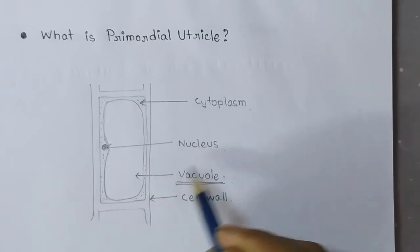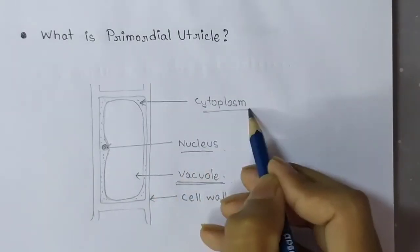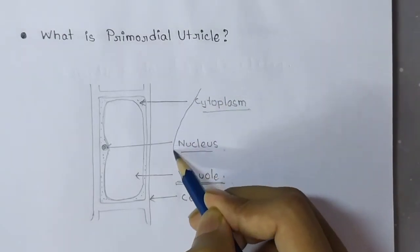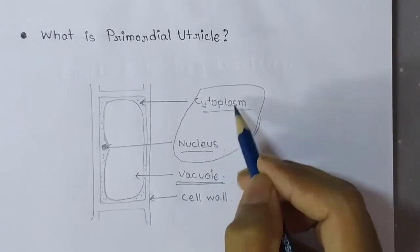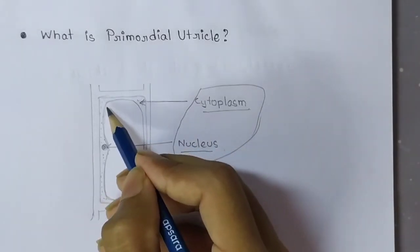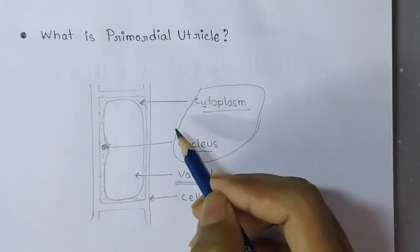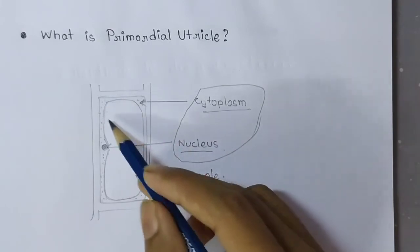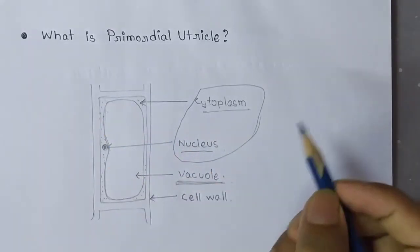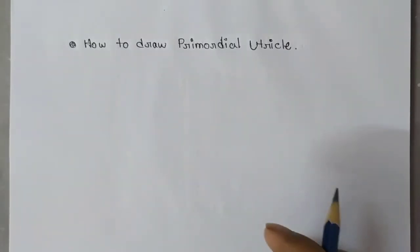It takes a ring shape, and then we come to the nucleus and the cytoplasm. The nucleus along with cytoplasm comes closer to the cell wall. In the condition of primordial utricle, the nucleus along with the cytoplasm comes closer to the cell wall. In plant cells, we can see a cell wall.